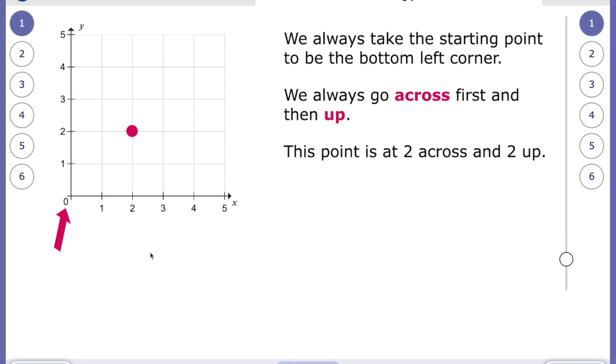So this point here is two across and two up. So we write that coordinate as two, two. And you can see we put them into brackets with a comma in between each individual coordinate.